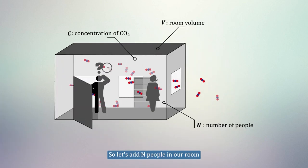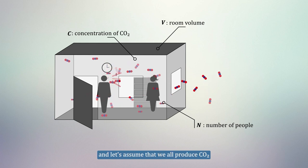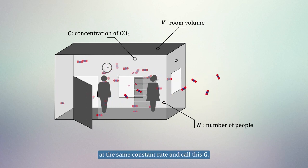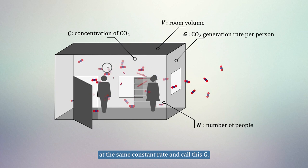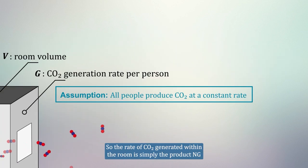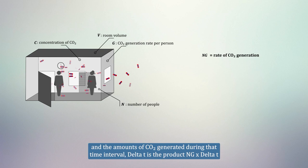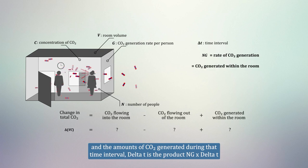So let's add N people in our room. And let's assume that we all produce CO2 at the same constant rate, and call this G, which is the CO2 generation rate per person. So the rate of CO2 generated within the room is simply the product N times G. And the amount of CO2 generated during a time interval delta T is the product N times G times delta T.